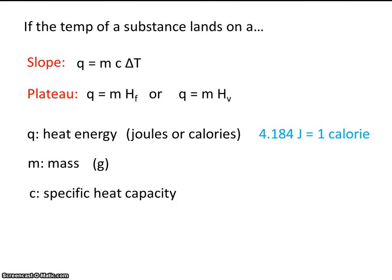C, we've already learned about specific heat capacity. Its units are joules per gram degrees C. And delta T, that's the change in temperature.